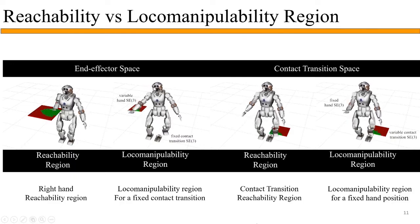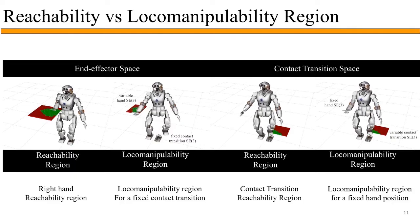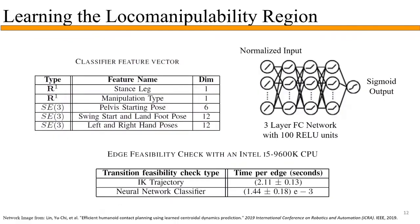Computing feasibility by performing IK configuration trajectories can be computationally expensive. To speed up the feasibility check, we tried to learn the loco-manipulability regions with a neural network-based classifier. With this approach, we obtain a speedup of three orders of magnitude — without the classifier each feasibility check takes about two seconds, and with the classifier each check takes about 1.5 milliseconds on a CPU-only implementation.